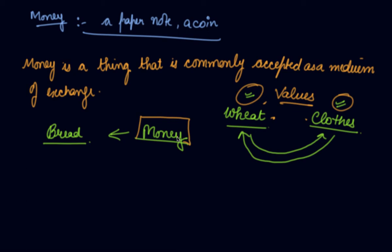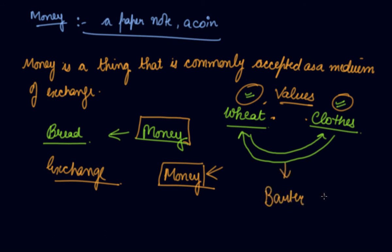In order to evaluate, in order to eliminate this drawback, the money came into existence. Now see, our whole life depends upon the exchange. We exchange. Nowadays we exchange money, which has evolved. But previously what we used to do, we used to exchange the goods with goods that was called as barter system.